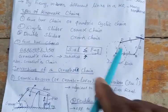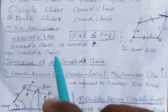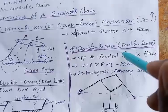To summarize the 4-bar chain: the idea behind it is S + L ≤ P + Q (Grashof's law). The inversions of a Grashof chain are: crank-rocker or crank-lever, double crank or drag link, and double rocker or double lever.